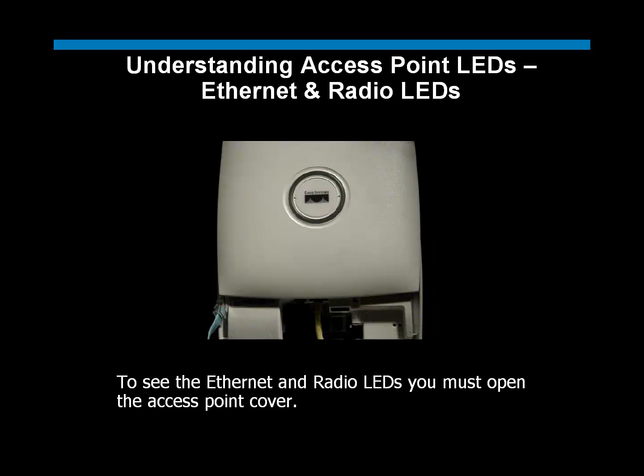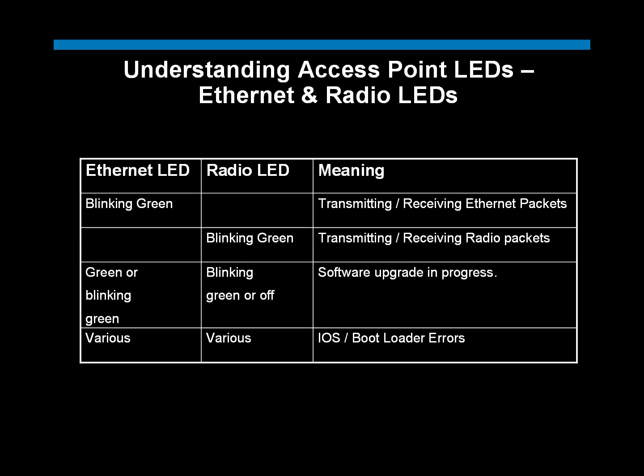Let's now look at the radio and Ethernet LEDs, found in the cable bay area of the Lightweight Access Point. These LEDs are pretty straightforward: blinking green on either of these LEDs indicates transmitting or receiving packets, and blinking green also indicates a software upgrade. If the access point experiences IOS or bootloader errors, you will see alternating amber, red, and green on the radio and Ethernet LEDs.